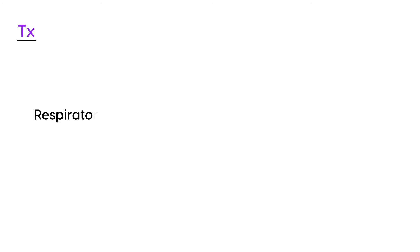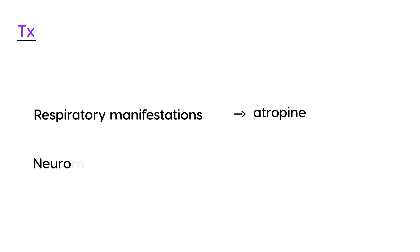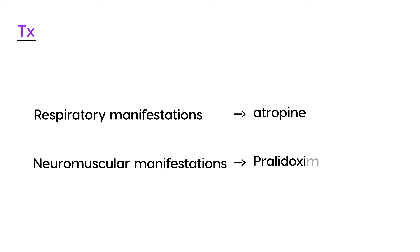To summarize treatment: respiratory manifestations from organophosphate poisoning are treated with atropine, reflecting overstimulation of muscarinic receptors. In contrast, neuromuscular manifestations are treated with pralidoxime, also known as 2-PAM. Now let's look at a few clinical vignettes to see what this looks like.